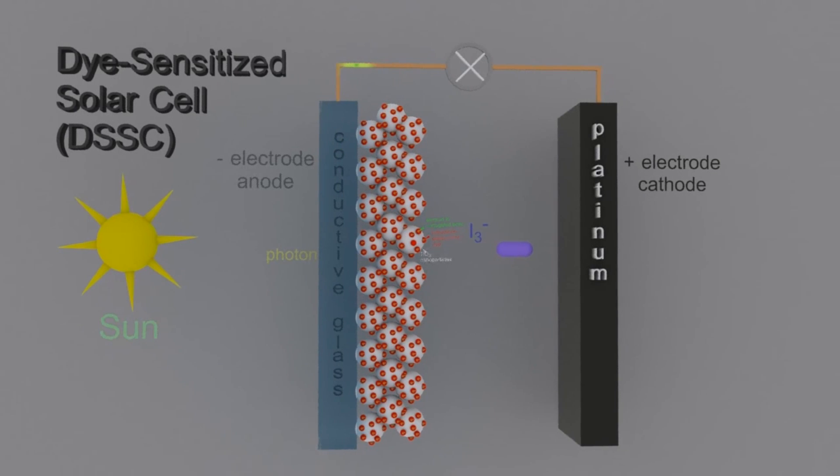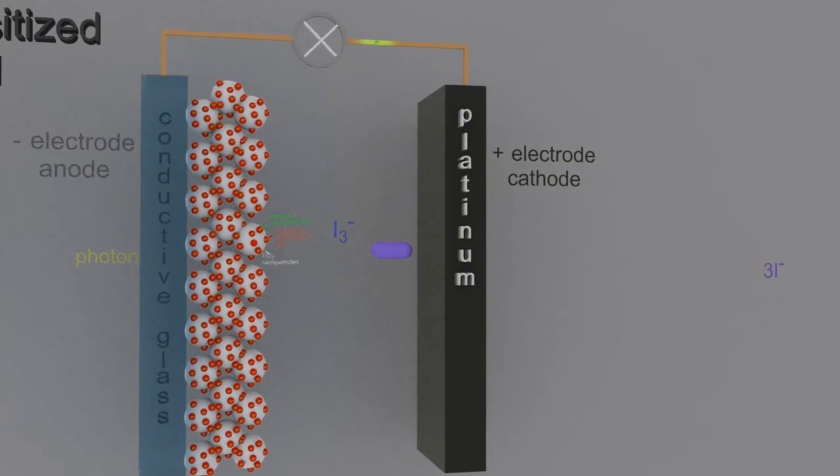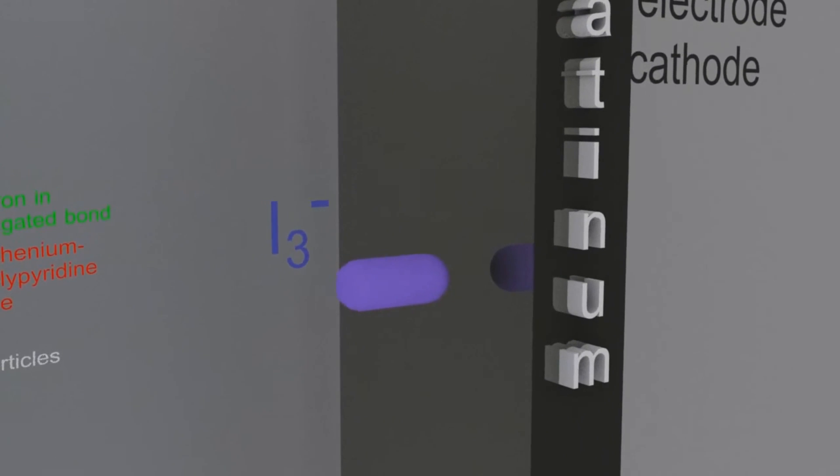The electron then passes through the circuit and does some work, maybe light a light bulb, and goes to the inert platinum cathode, the positive electrode.